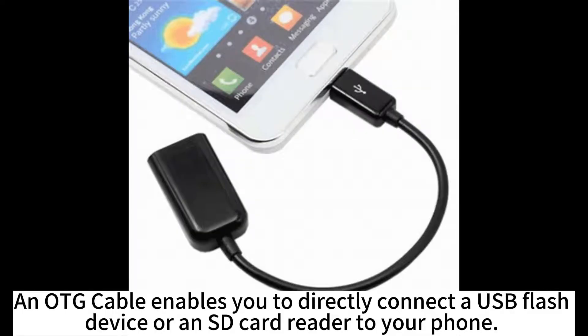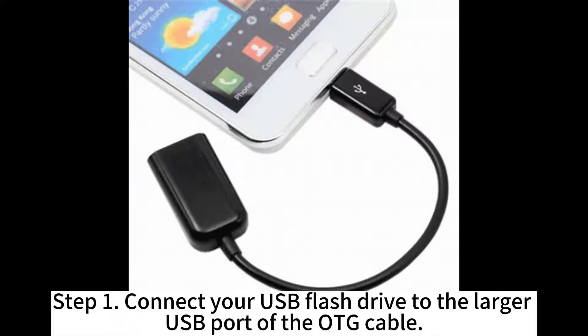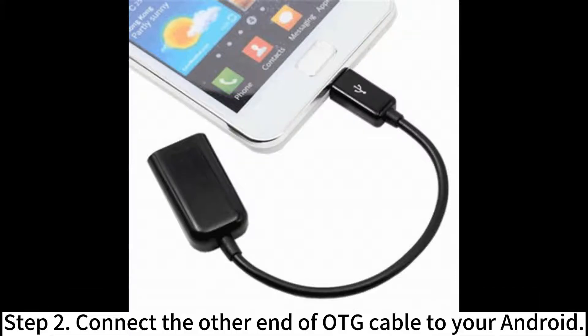An OTG cable enables you to directly connect a USB flash device or an SD card reader to your phone. Step 1: Connect your USB flash drive to the larger USB port of the OTG cable. Step 2: Connect the other end of the OTG cable to your Android.